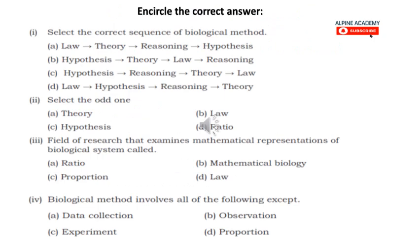Now let's go to review questions, which will quickly give us an idea of what is covered in the chapter. First question: encircle the correct answer — select the correct sequence of biological method. The correct sequence of biological method is hypothesis, reasoning, theory, and then law. So the correct answer is C.